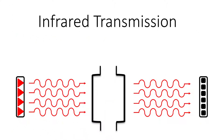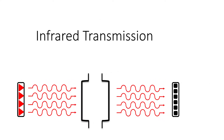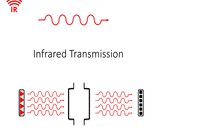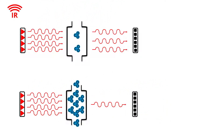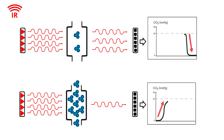For both measurements, the measurement principle is infrared transmission. Infrared waves fall on a photodetector. The more CO2 present in the respiratory gas, the more infrared rays are absorbed. The monitor uses the information from the detector to display the capnography.